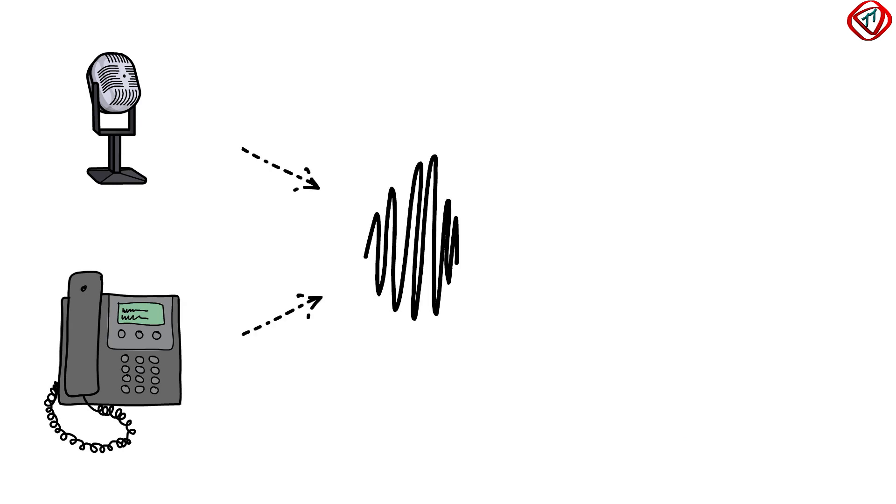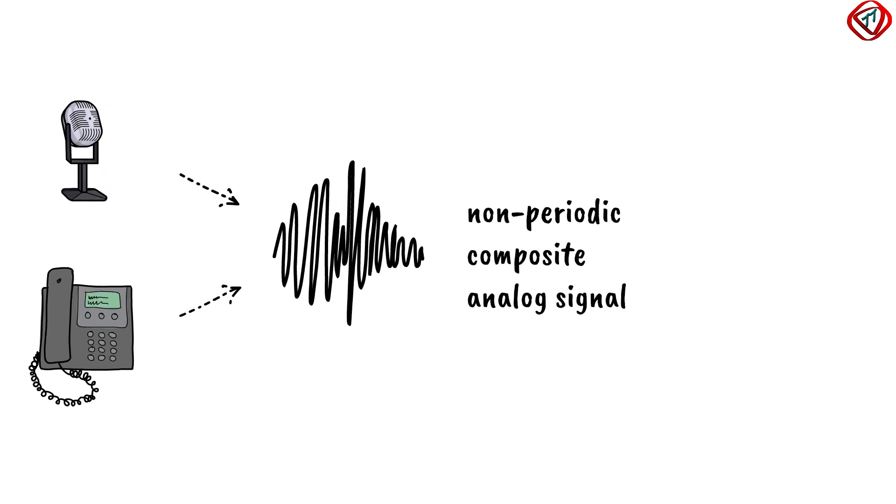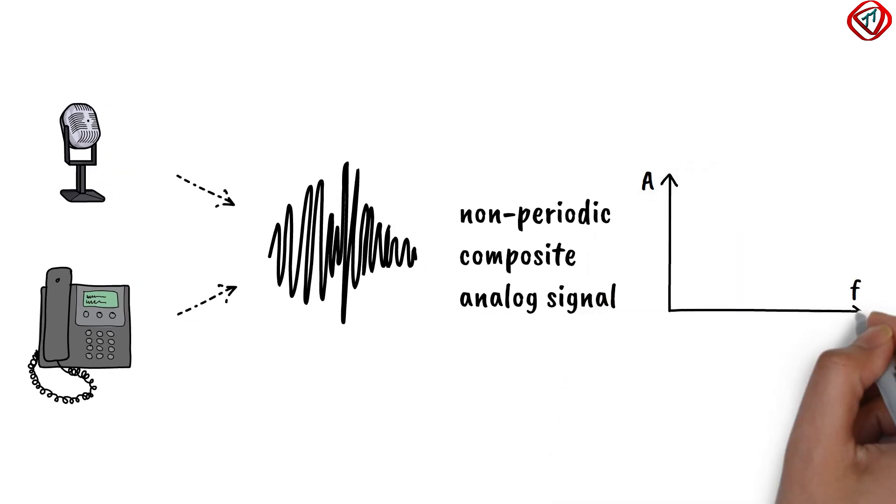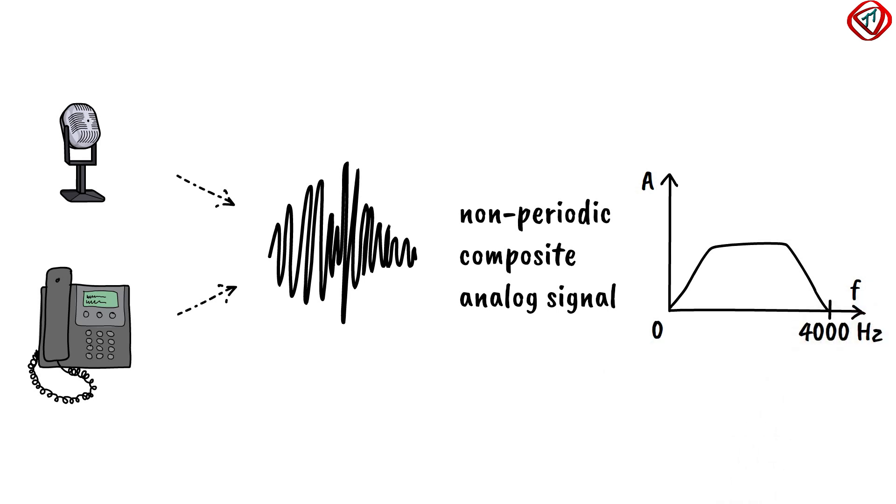A microphone or telephone generates a non-periodic composite signal for human voice. On decomposition, it results in an infinite number of sine waves with continuous frequencies between 0 and 4000 Hz. So the frequency domain of a non-periodic composite signal is always continuous.